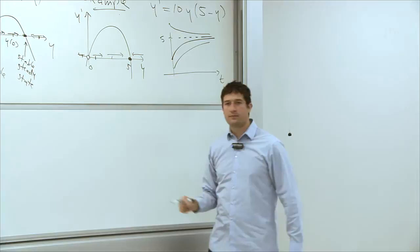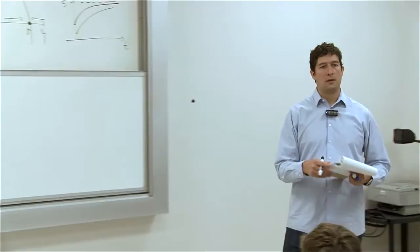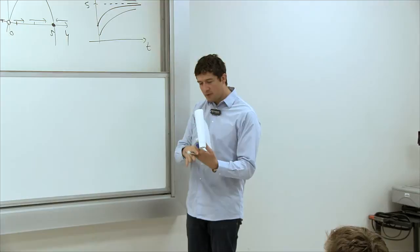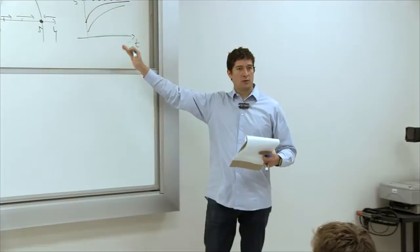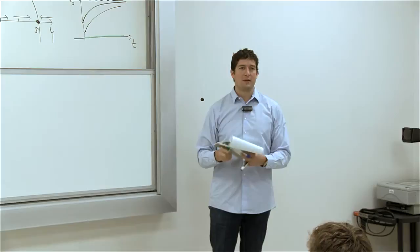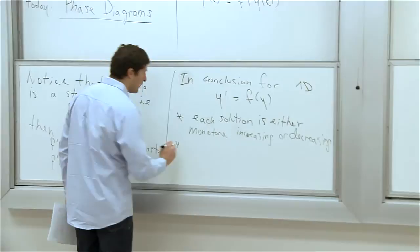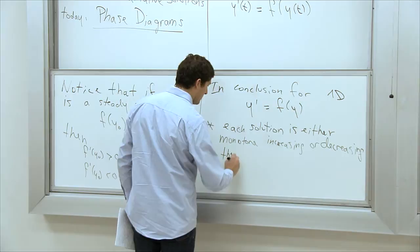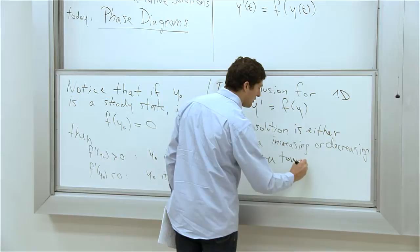Solutions always go away from zero unless you start exactly at zero — in which case you stay at zero, which is a steady state. Staying at y equals 5 is also a solution. So solutions are either monotonically increasing or decreasing, and they tend to converge towards steady states.